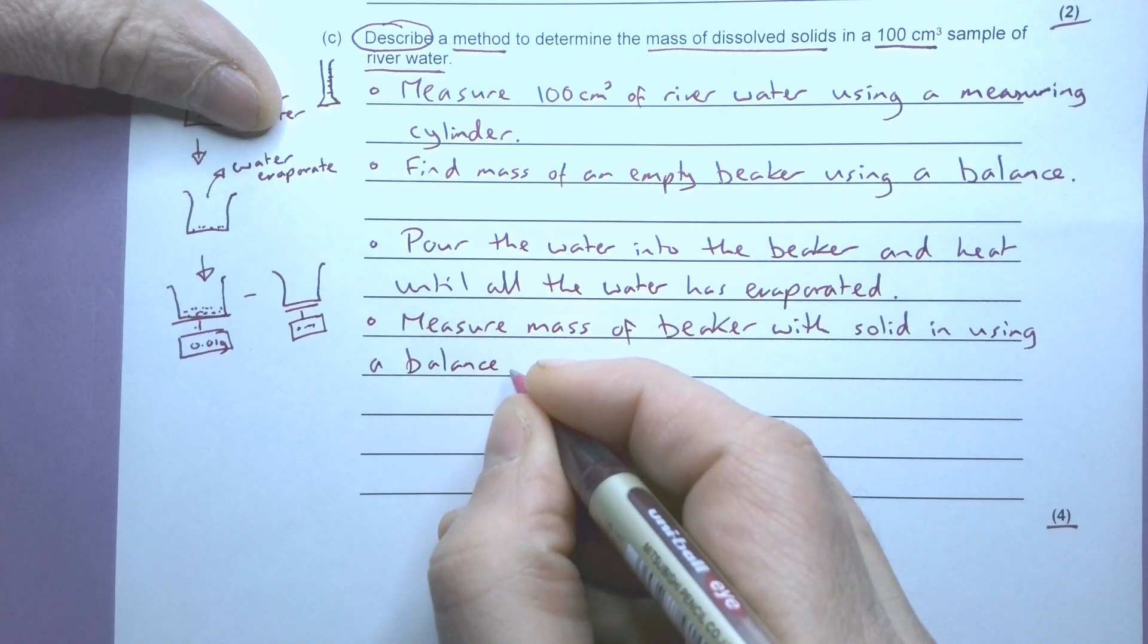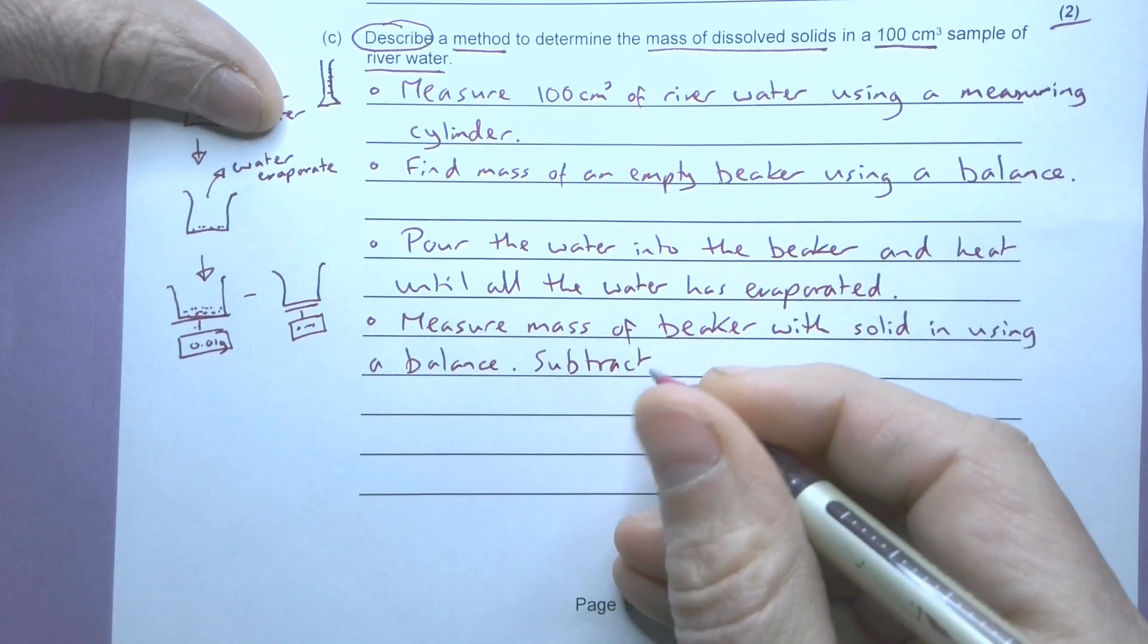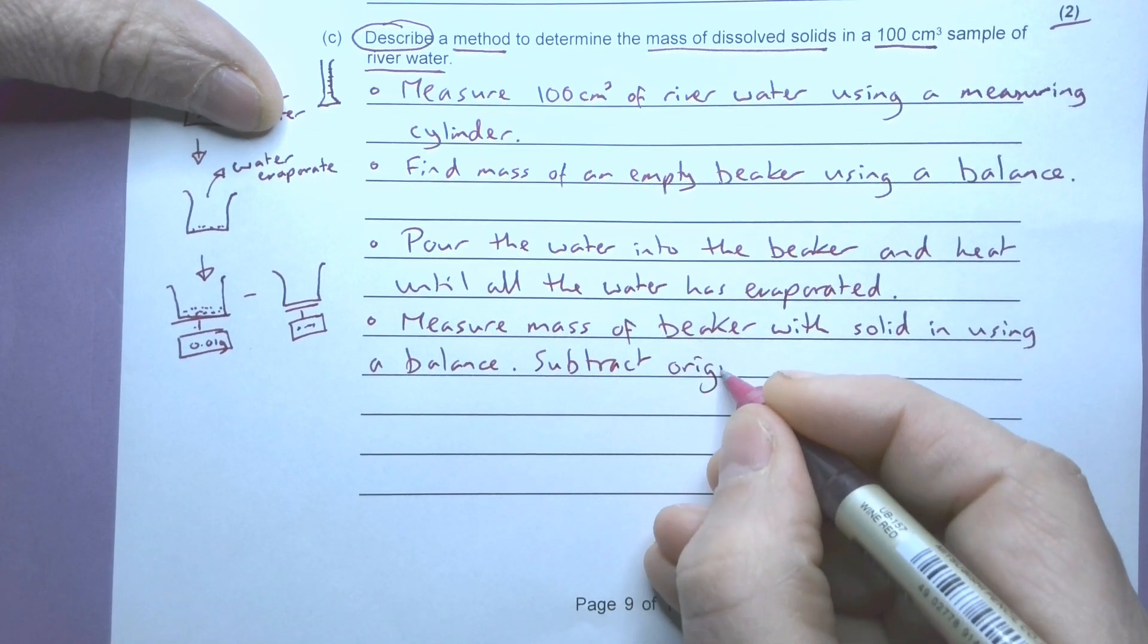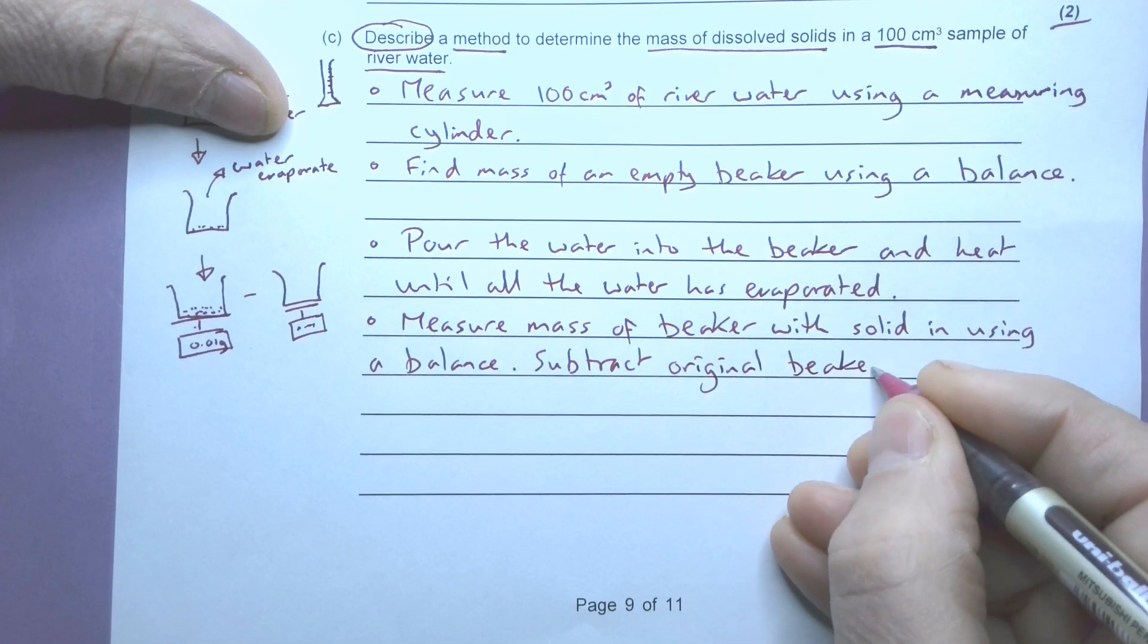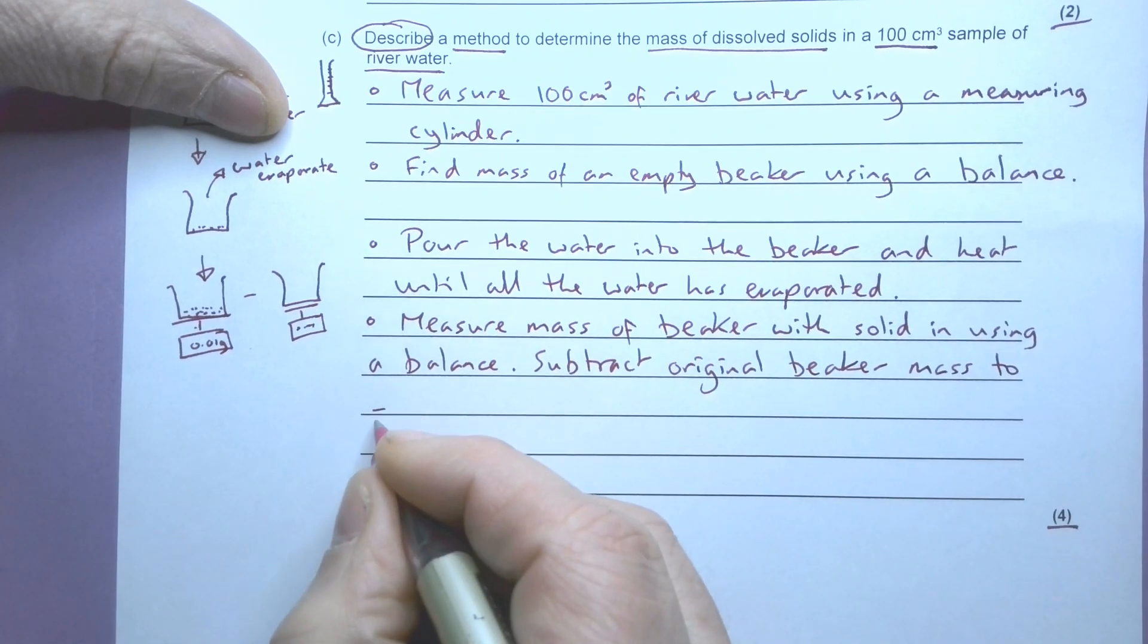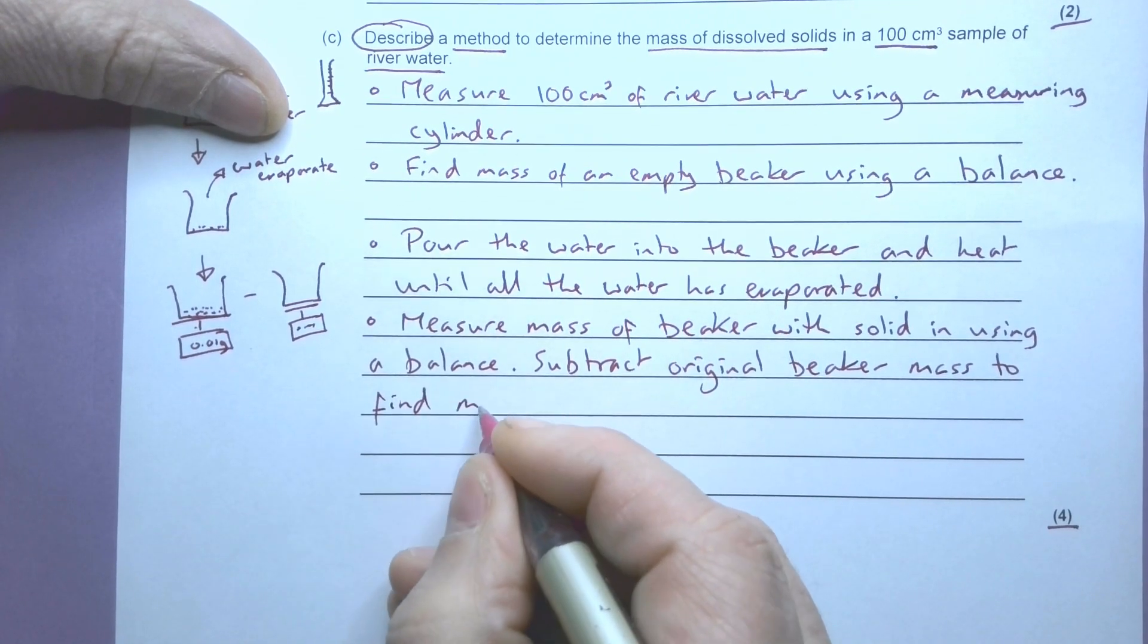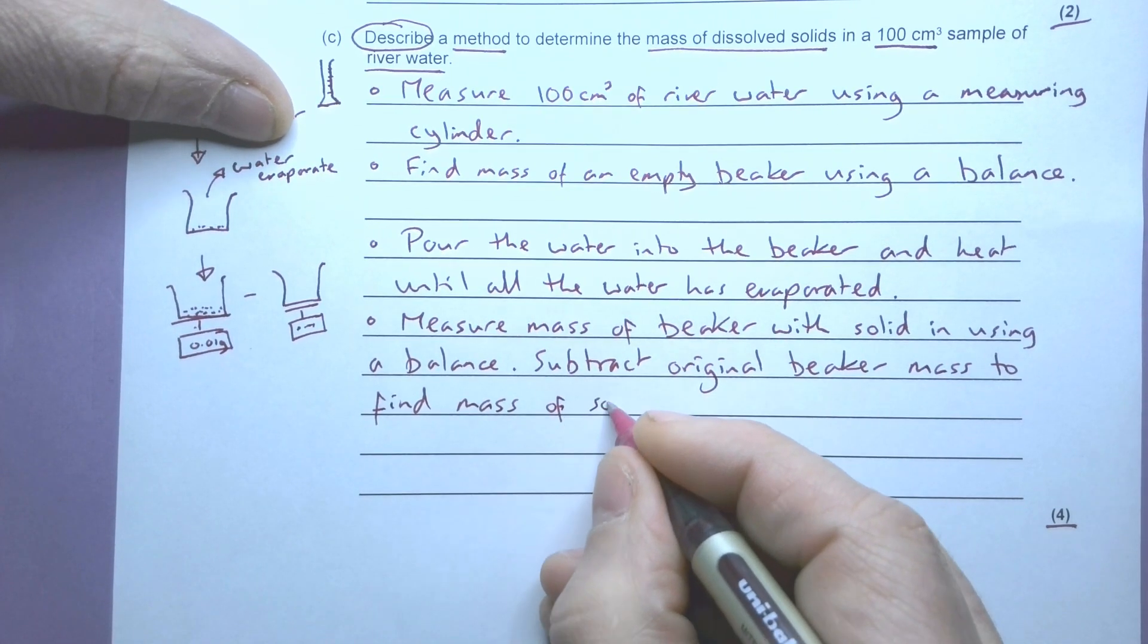I'm going to subtract the original beaker mass to find mass of solids.